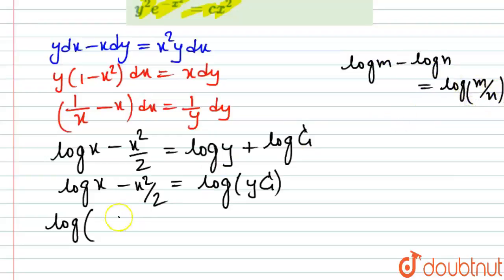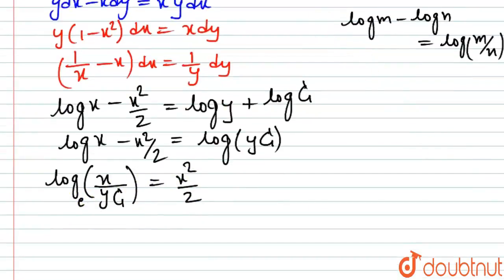Just using that, this becomes log of x upon y times c, this is equal to x square upon 2. Here the base was e, natural logarithm. This becomes e power x square upon 2, that is equal to x upon y c.